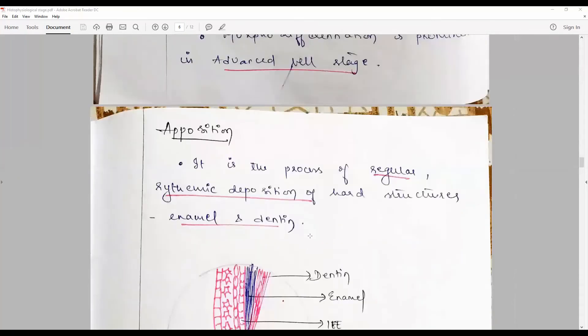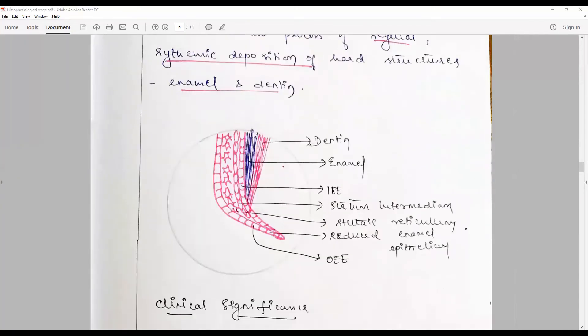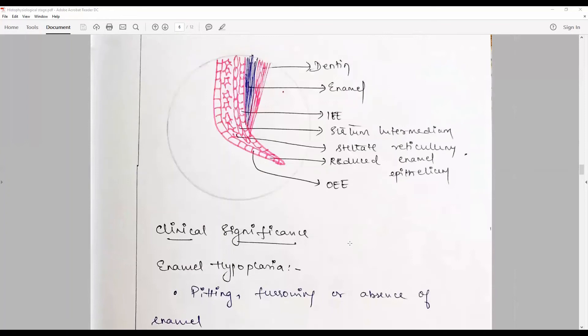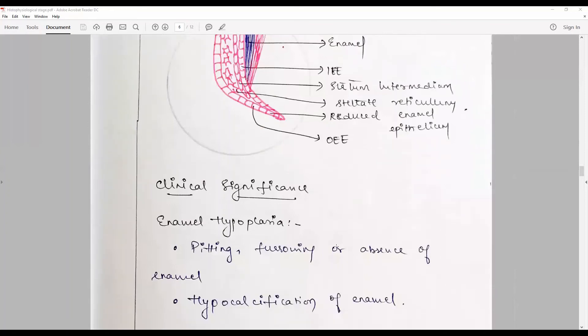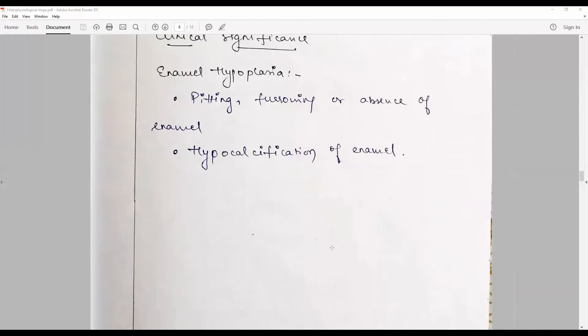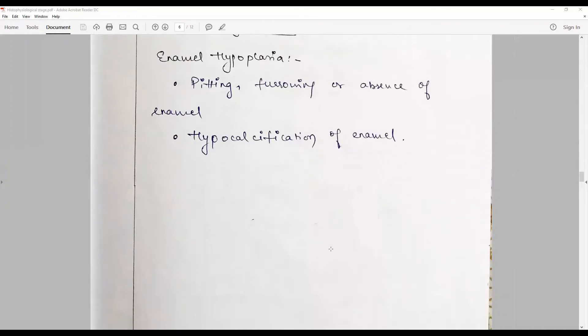Apposition is the regular rhythmic deposition of hard structures of enamel and dentine calcification. Clinical significance: attribute to hypoplasia, hypocalcification, amelogenesis imperfecta, dilacerations. All these things, the candidate should have elaborated a little bit. A lot of things are possible.